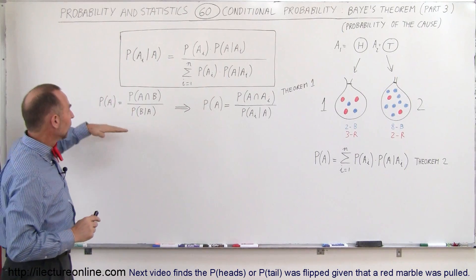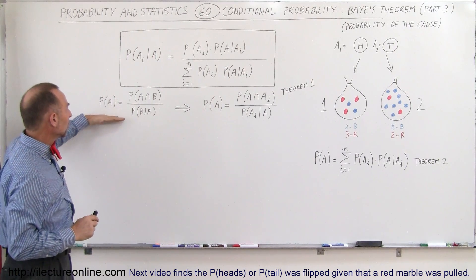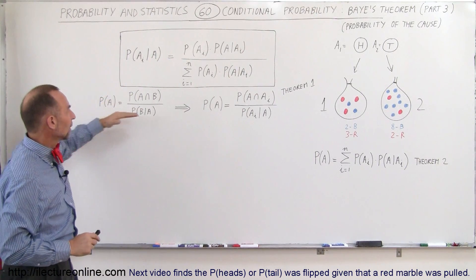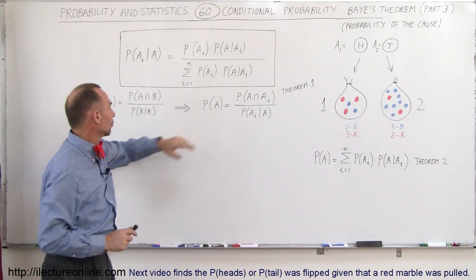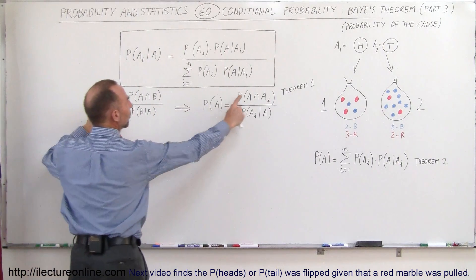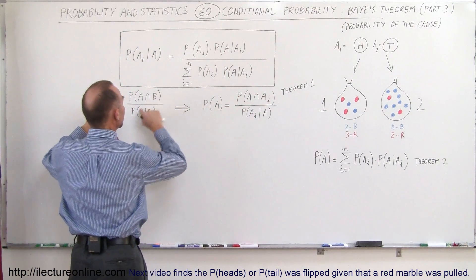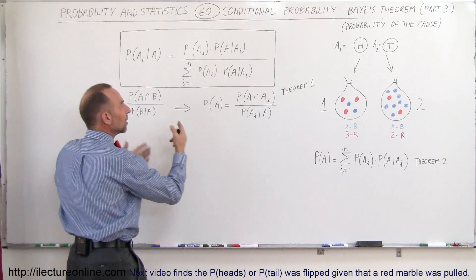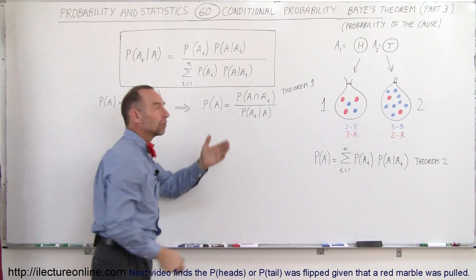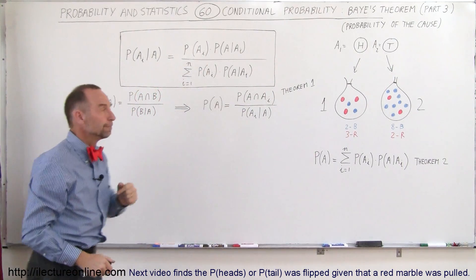From Theorem 1, where this was a general way of writing it, we can write it like this. Notice that we still have A everywhere, but instead of B — some other independent event — we have A sub i, like tossing a coin.